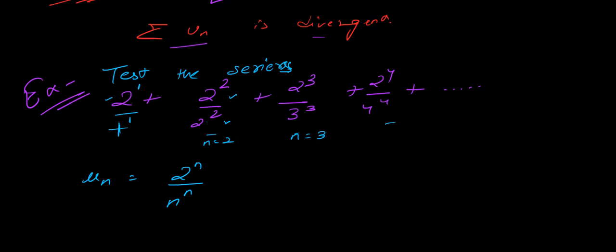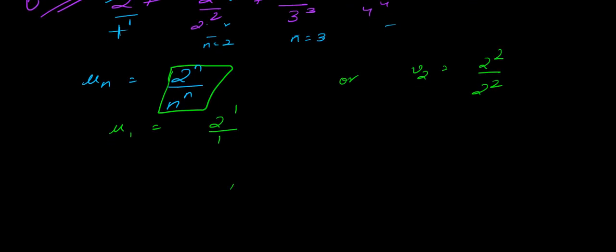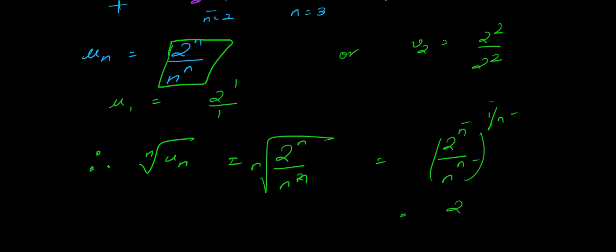Now we compute un^(1/n). We have un^(1/n) = (2^n / n^n)^(1/n) = 2^(n·(1/n)) / n^(n·(1/n)) = 2 / n. So un^(1/n) equals 2/n. We can see that 2/n will always be less than 1, because our n starts from 1 and goes to infinity while the numerator is fixed at 2.